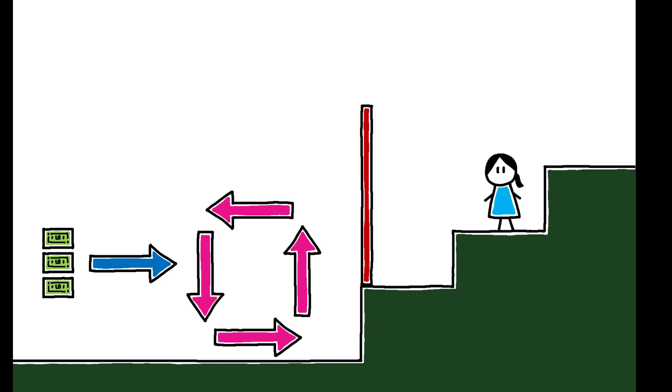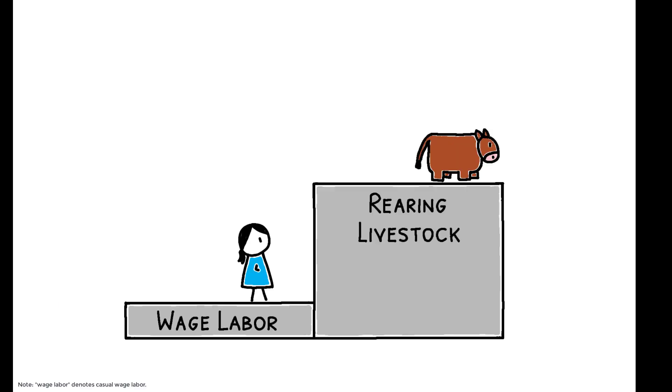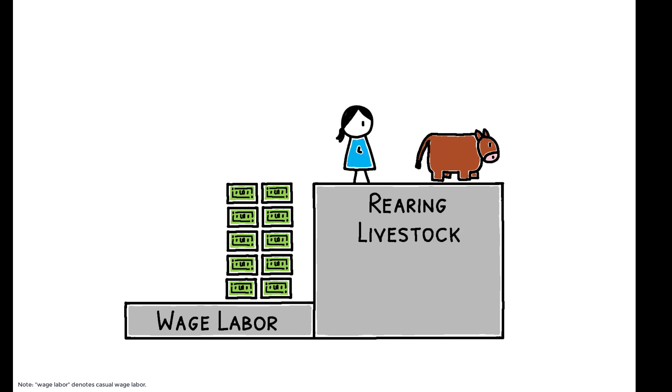The poor in this setting are not constrained by some fundamental trait. Rather, they are excluded from more productive occupations by their inability to make a large enough initial investment. Once this constraint is removed, they transition from casual wage labor to more profitable occupations and escape poverty.